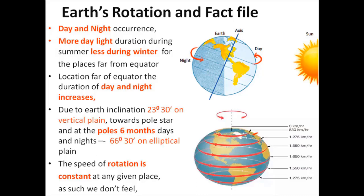At 66 degrees 30 minutes latitude, the distance covered by the Earth is 830 km per hour. At the North Pole, the distance covered is 0 km per hour. Due to the curvature of the Earth, in spite of the rotation being constant, the distance covered at different latitudes varies. This is one of the very important effects of rotation on Earth at different latitudes.